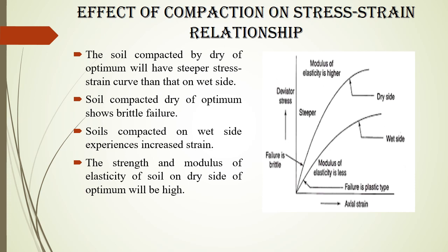Here we can see the relationship between stress and strain. For the dry side, failure is brittle with a steeper slope, so the modulus of elasticity is higher. In the case of the wet side, the failure is plastic type, so the modulus of elasticity is less. The plot is between axial strain and deviator stress.